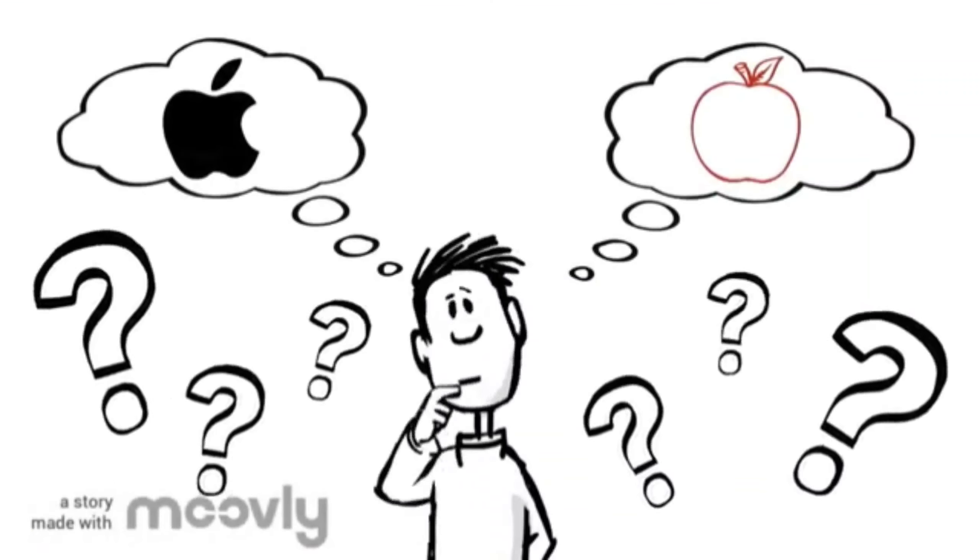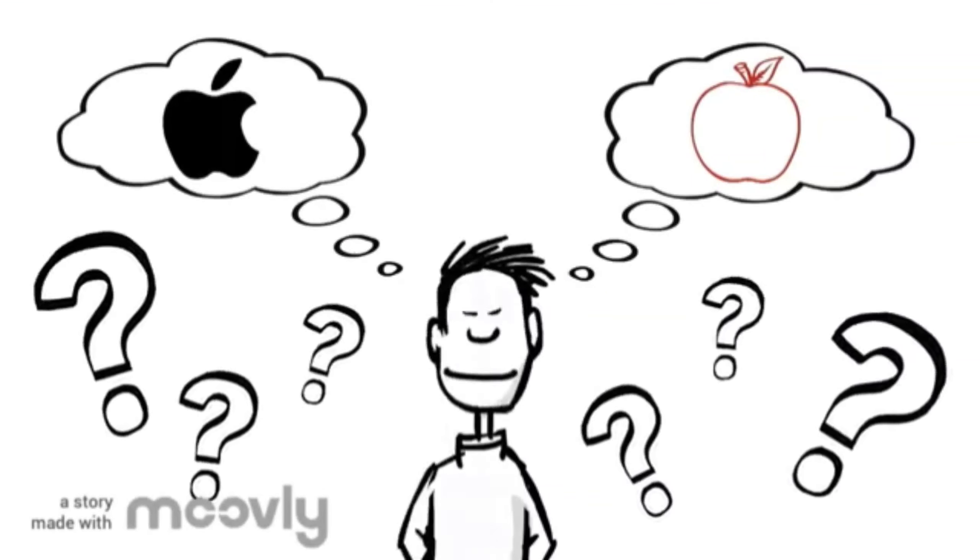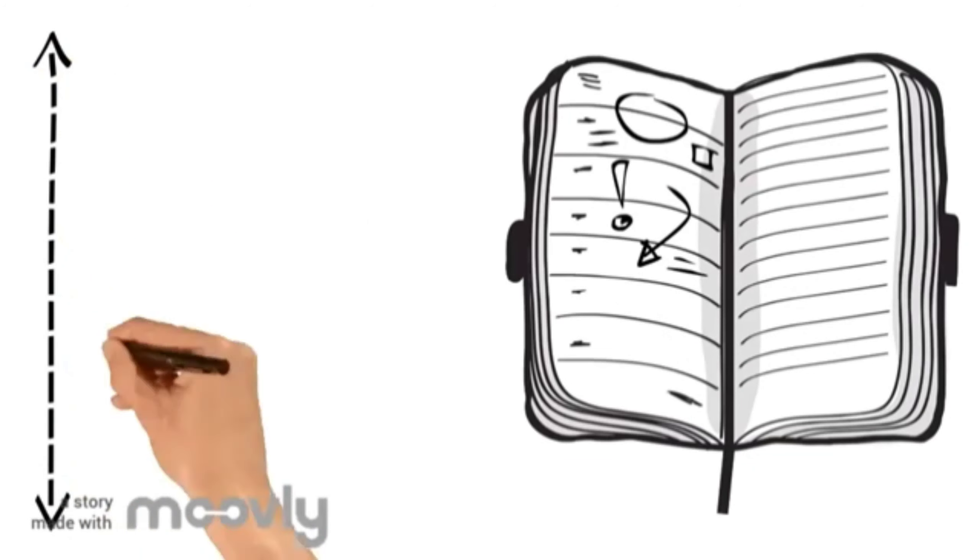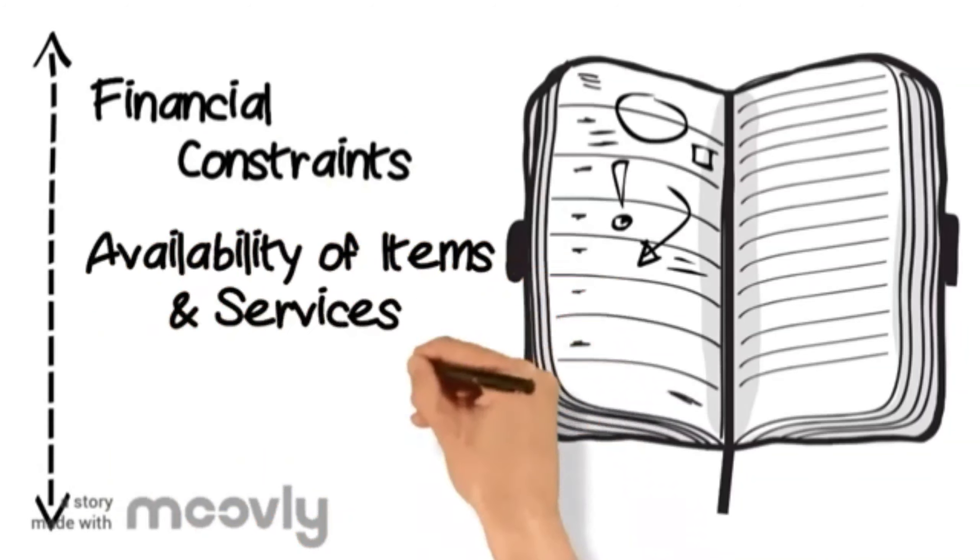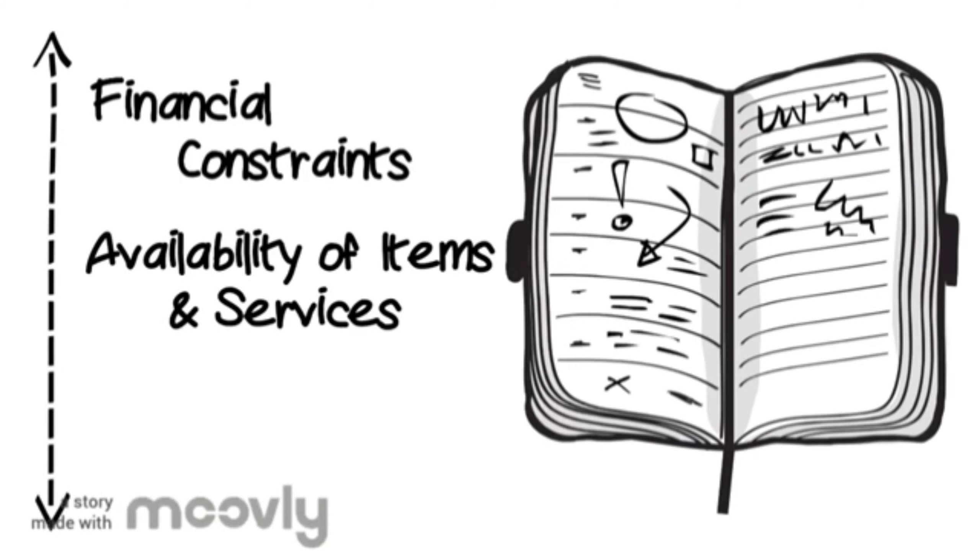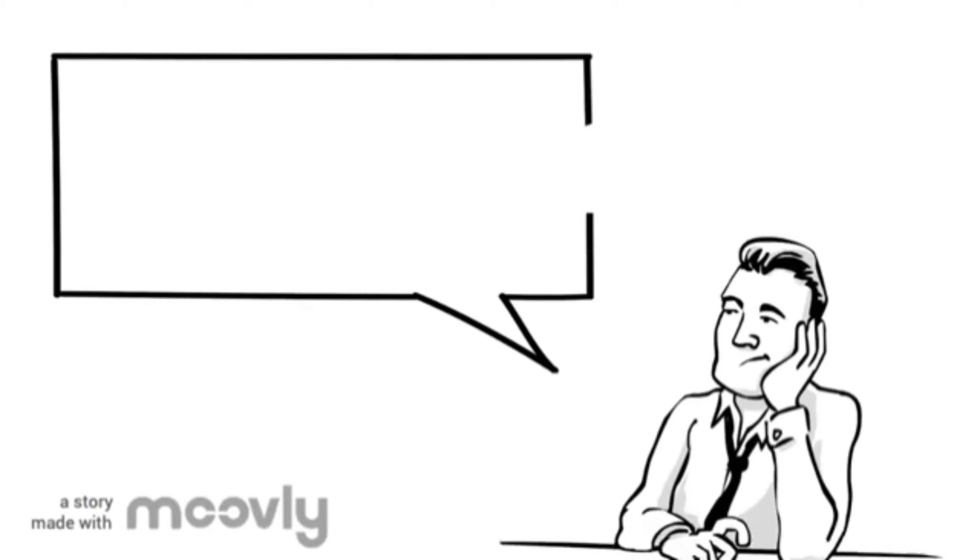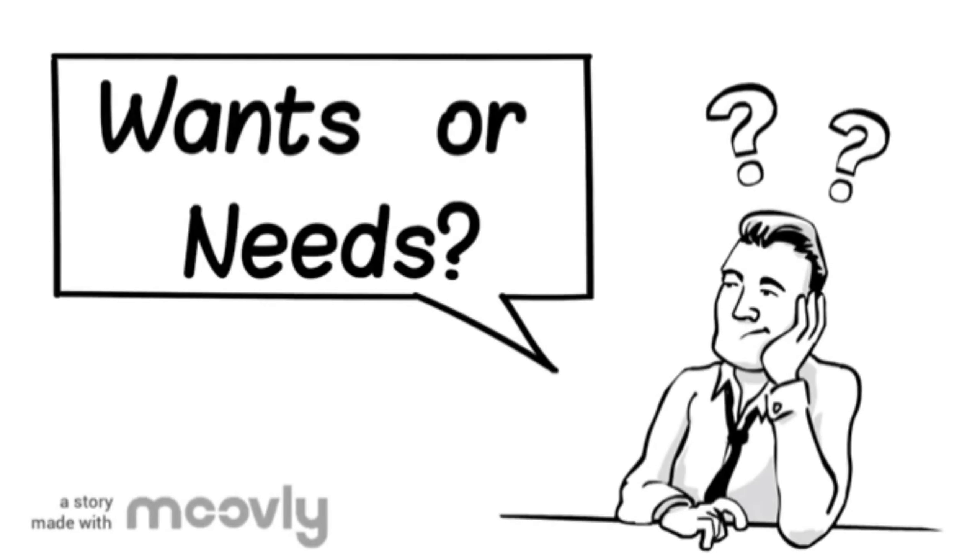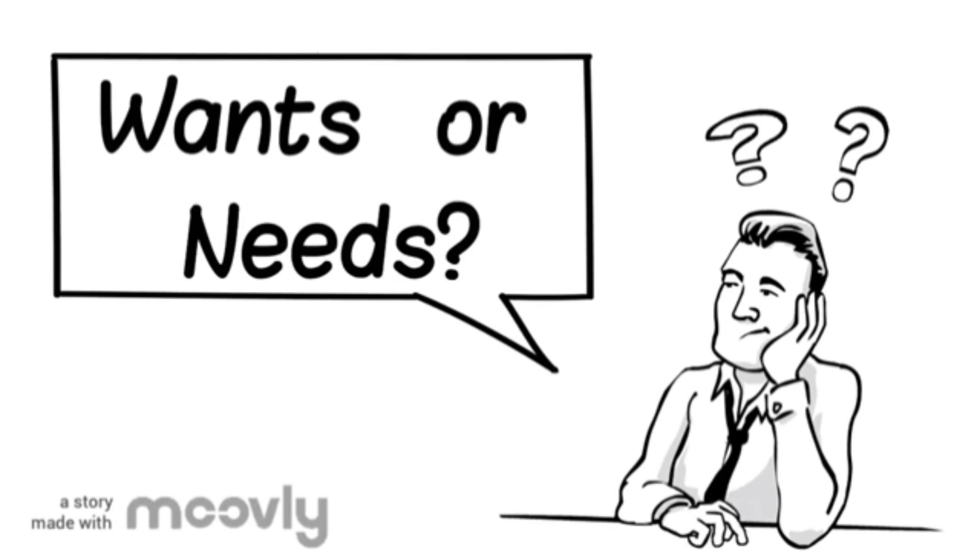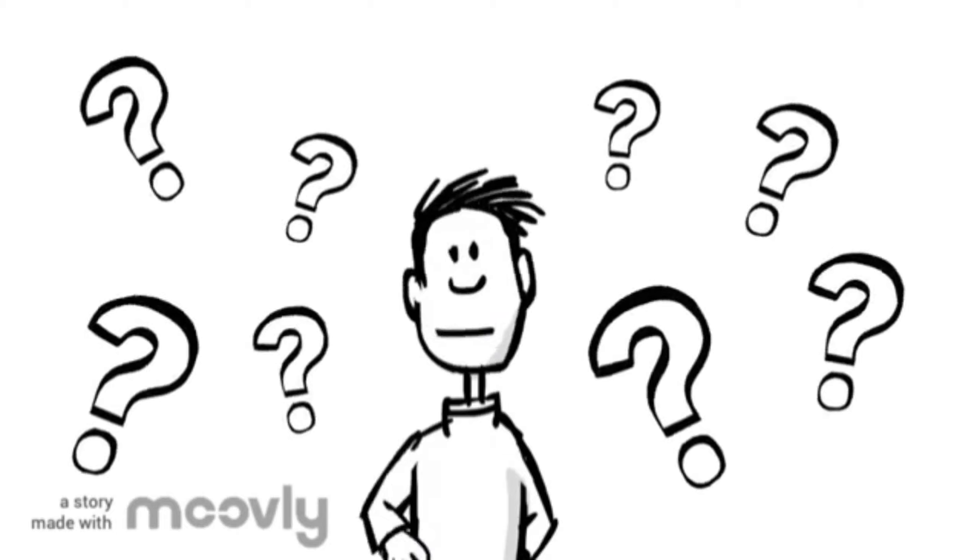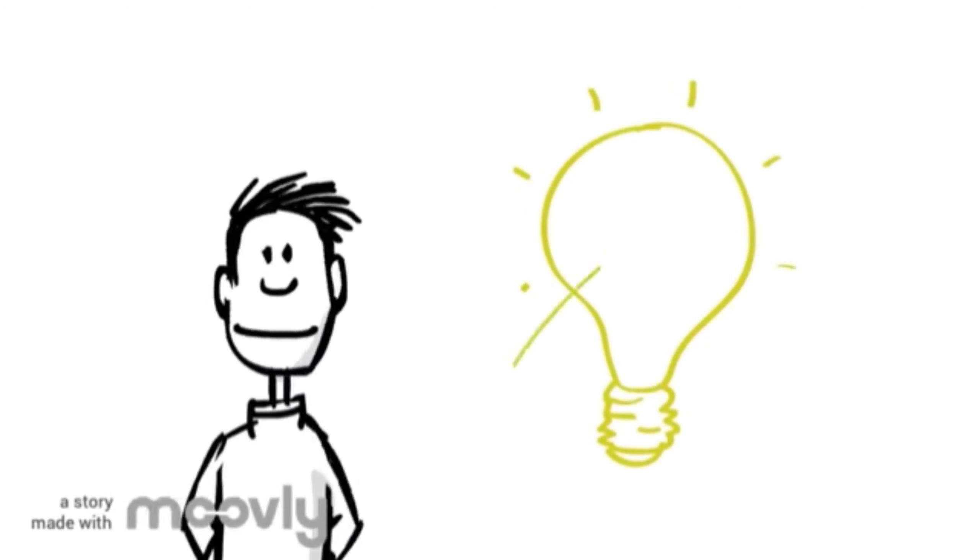The decisions that go into the purchase of items and certain services is dependent on a number of factors including financial constraints, availability of items and services, and the influence of family and friends. However, the most important factor is determining whether these items and services fall under wants or needs. Some people may confuse needs with wants, but there is a clear distinction.